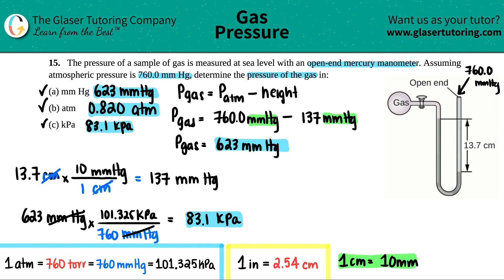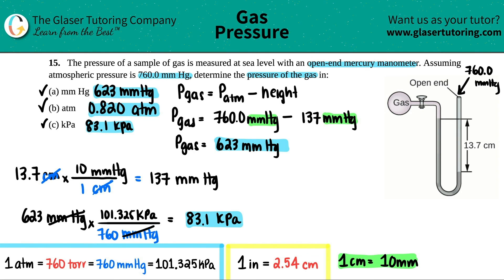Remember, all three answers — 623 mmHg, 0.820 atm, and 83.1 kPa — represent the same amount of pressure, just expressed in different units. Hopefully this helped! Thanks for watching, good luck on your future tests and quizzes, and I'll see you in later lessons.